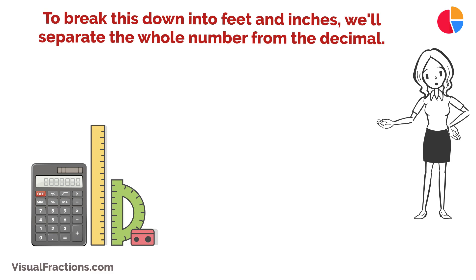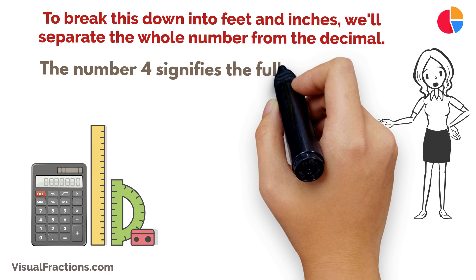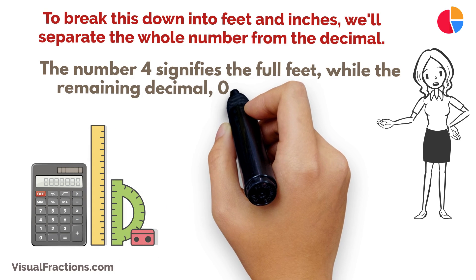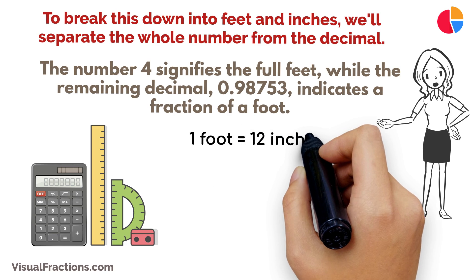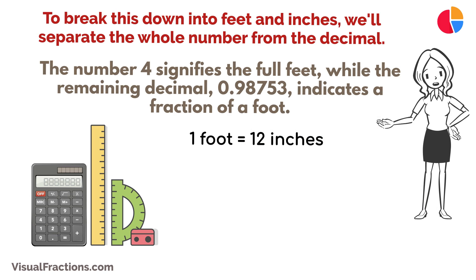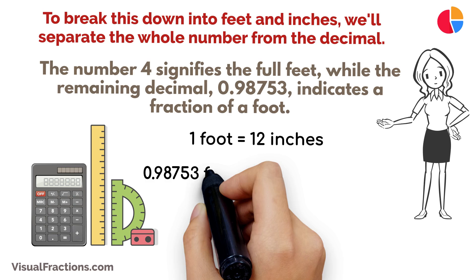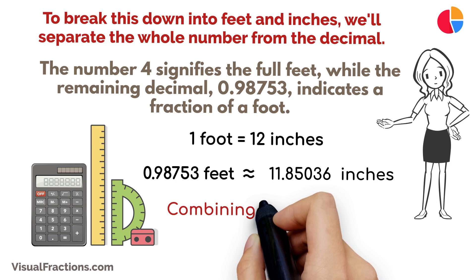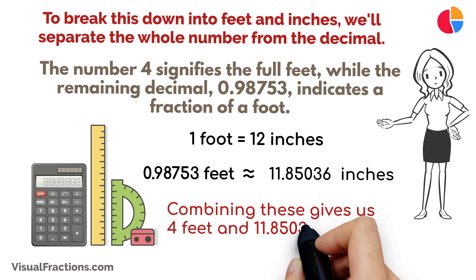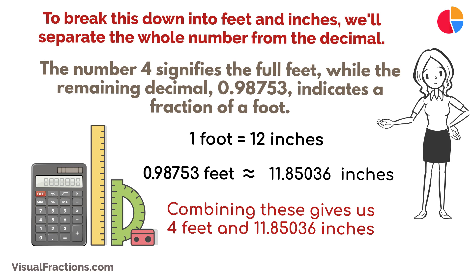To break this down into feet and inches, we'll separate the whole number from the decimal. The number 4 signifies the full feet, while the remaining decimal, 0.98753, indicates a fraction of a foot. Since one foot contains 12 inches, we'll convert the fractional part into inches by multiplying it by 12. Thus, 0.98753 feet is approximately 11.85036 inches. Combining these gives us 4 feet and 11.85036 inches, which we can round to 4 feet and 11.85 inches for simplicity.